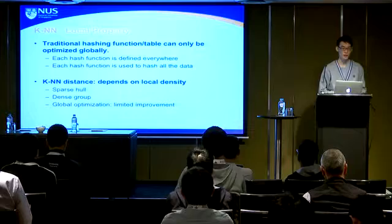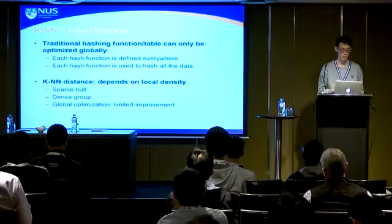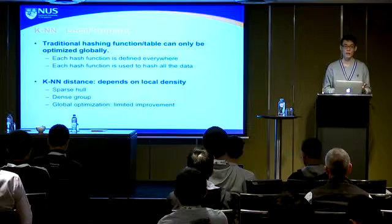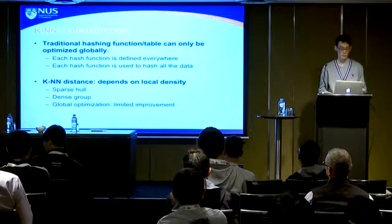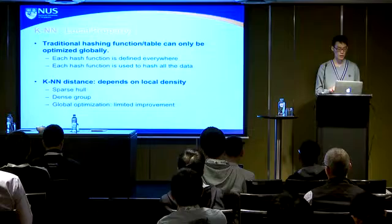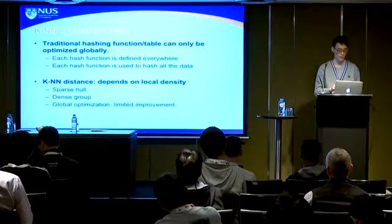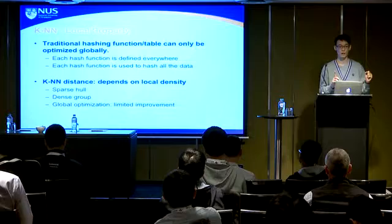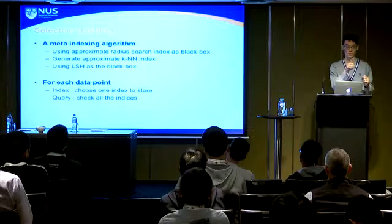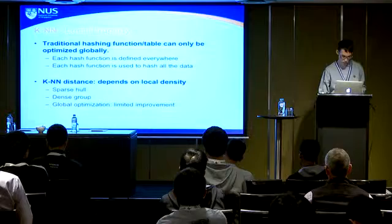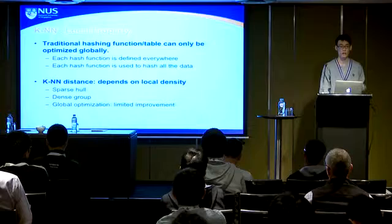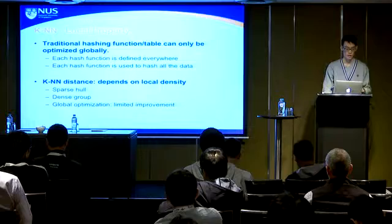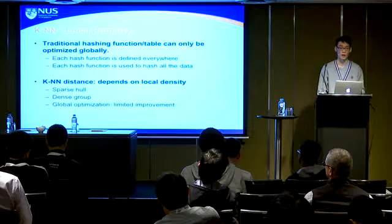If we use traditional hashing methods for KNN, we find that traditional hash tables can only be optimized globally — each hashing function is defined everywhere and used to hash all data. But the KNN problem is a local property: whether a point is the KNN of a query is decided not just by the point itself, but also by the surrounding dataset. In a sparse region the KNN distance is very large; in a dense region it is very small. So global optimization of the hashing gives limited improvement, and we need a method that optimizes the index structure locally.